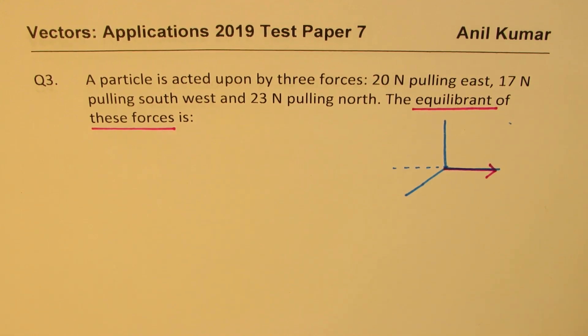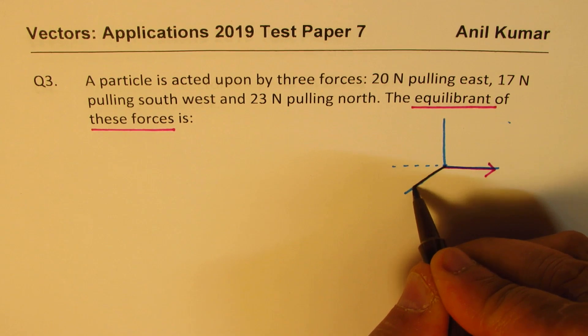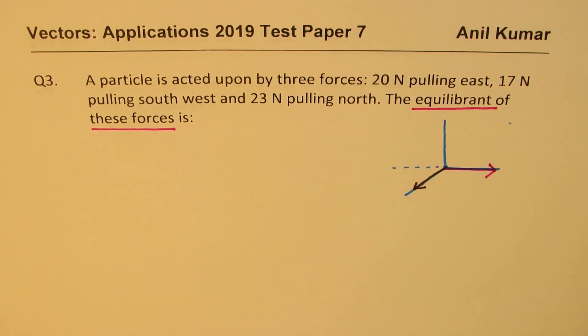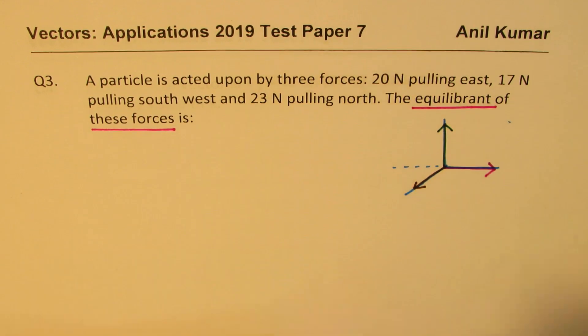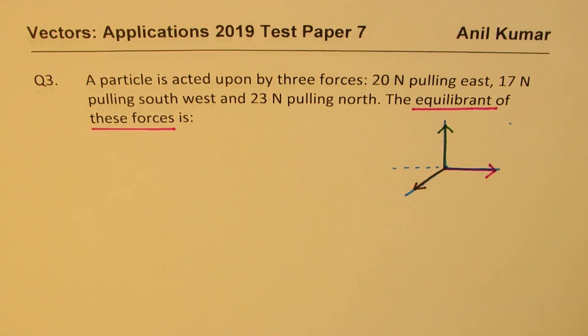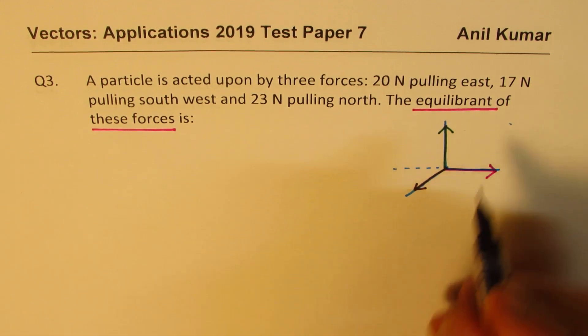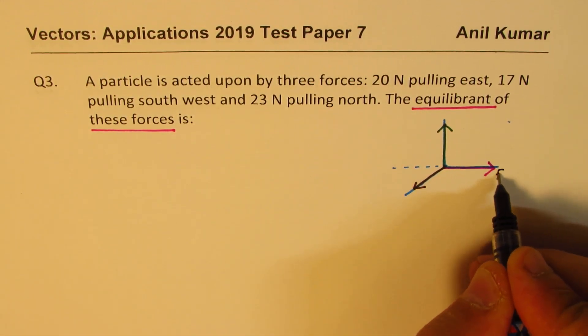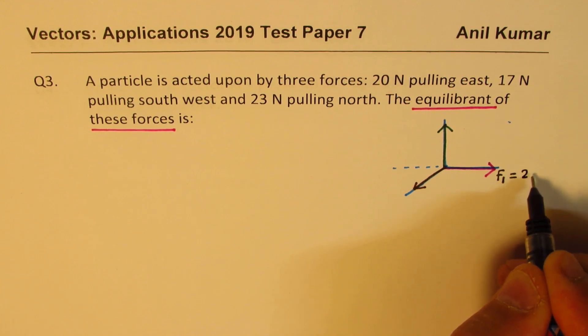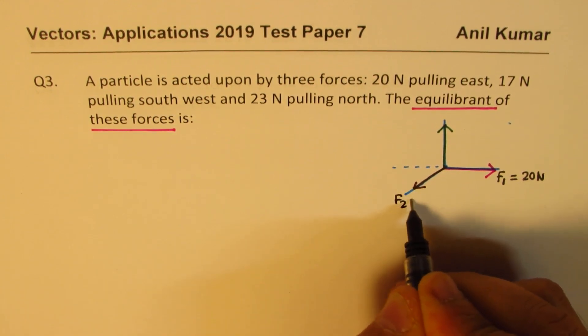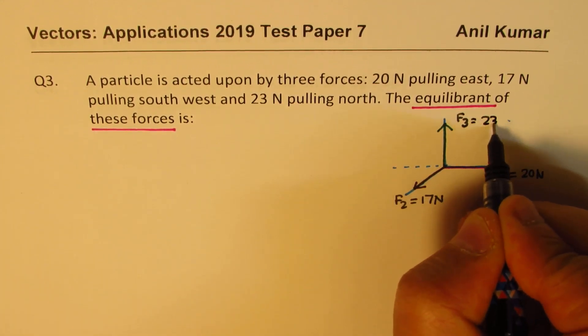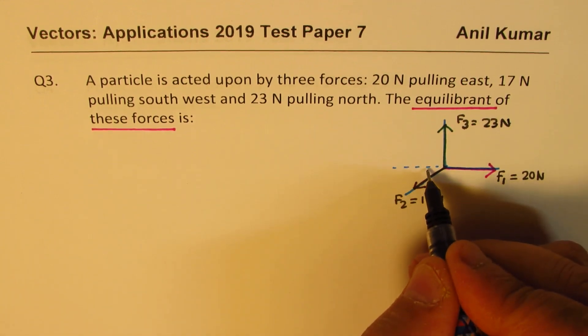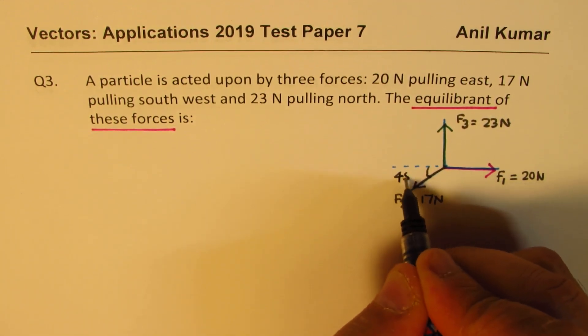And then we have another force which is 17 Newtons pulling southwest. So this is south west for us. And then we have the third force which is acting north, 23 Newtons. The angle with the horizontal here will be 45 degrees.